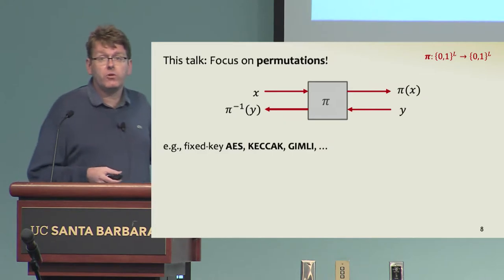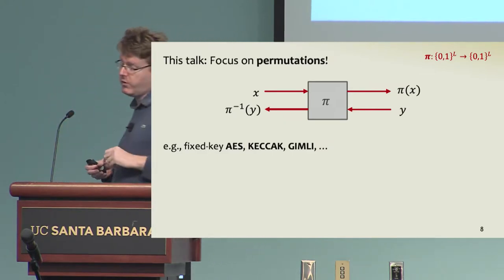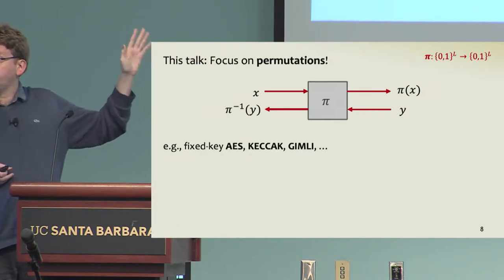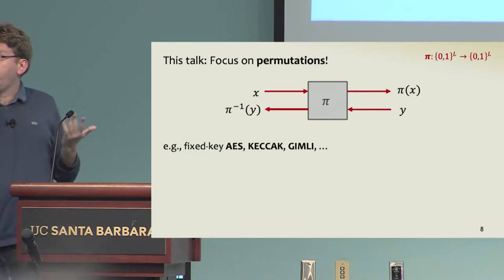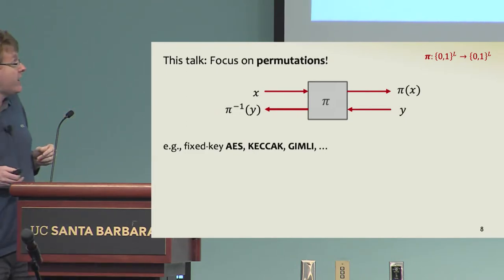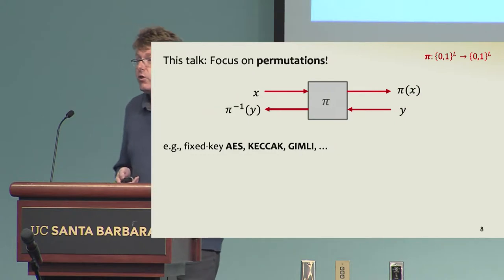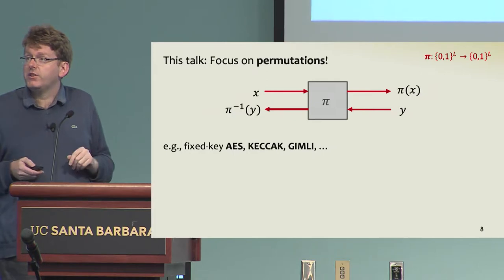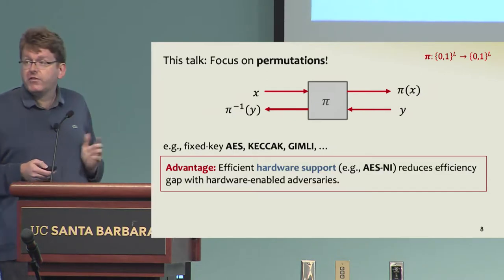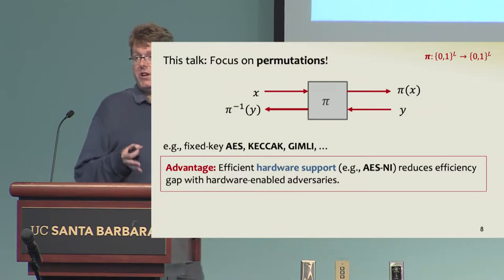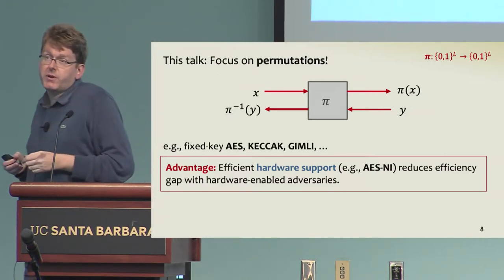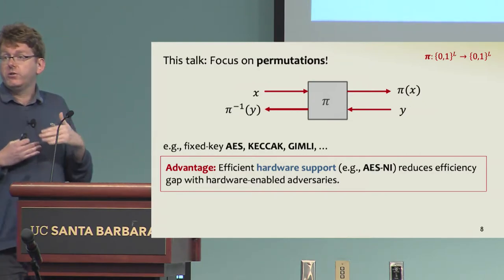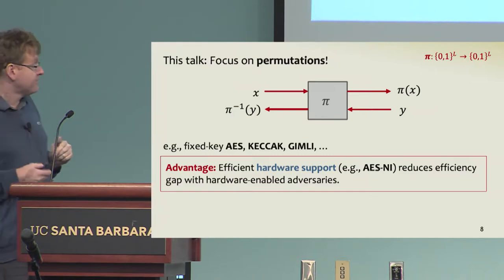I will specifically focus on the case of permutations. I think it's the most important one. These are efficiently computable and efficiently invertible keyless permutations. This is the case in most practical designs. Permutations are attractive because you might instantiate them from fixed-key AES and build a memory hard function out of that. One attractive feature is that your CPU mostly comes with hardware-based efficient implementation of AES, and this will help reduce the gap between software and hardware implementation.